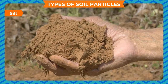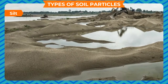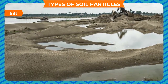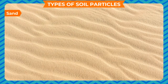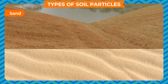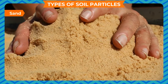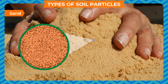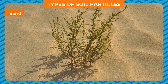Silt: Particles of silt are bigger than clay particles and are generally found in river beds. Their size is around 0.005 to 0.05 mm. Sand: These particles are much larger than clay and silt, have very poor water retaining capacity, and are rough to touch. Their size varies between 0.05 to 0.2 mm.